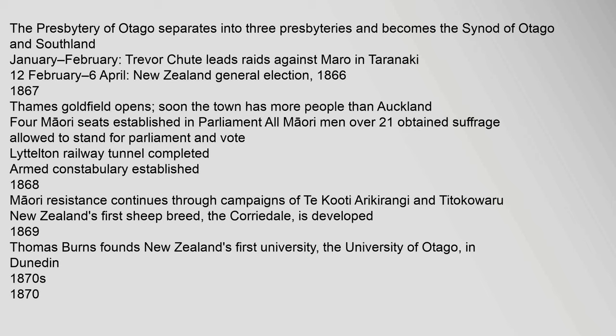January–February: Trevor Shute leads raids against Maori in Taranaki. 12 February – 6 April: New Zealand general election. 1866–1867: Thames Goldfield opens; soon the town has more people than Auckland. Four Maori seats established in Parliament. All Maori men over 21 obtain suffrage — allowed to stand for Parliament and vote. Lyttelton Railway Tunnel completed. Armed Constabulary established.